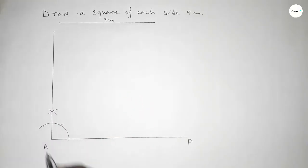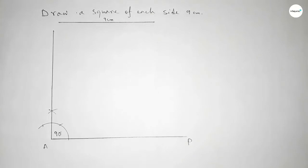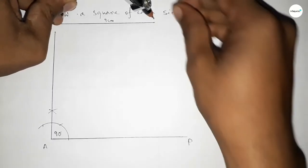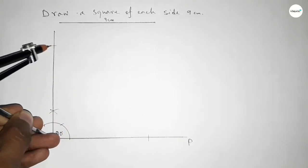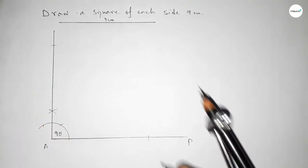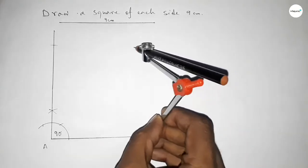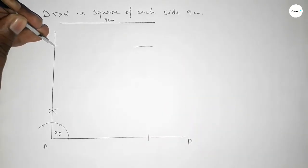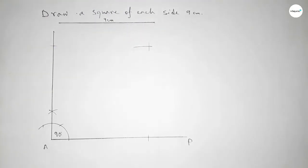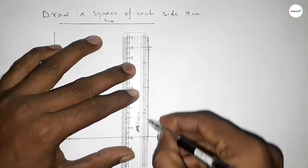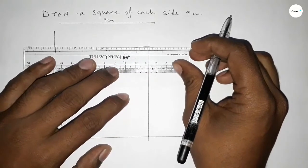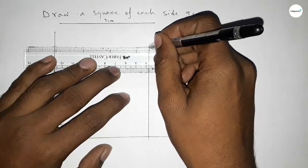We got a 90-degree angle. Now taking the length 9 centimeters using the compass, putting the compass on point A and cutting arcs with the same length. Drawing an arc and cutting again — both curves intersect at a point.